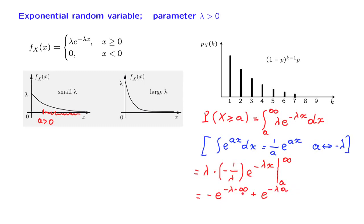Now, e to the minus infinity is 0, and so we're left just with the last term, and the answer is e to the minus lambda a. So this gives us the tail probability for an exponential random variable. It tells us that the probability of falling higher than a certain number falls off exponentially with that certain number.